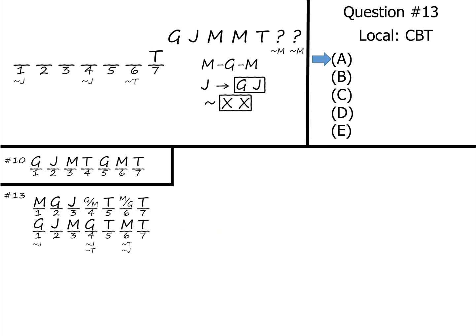Answer choice A says freedom makes a voyage to Trinidad in week one. We'd say no, it's either M or G. B, freedom goes to Martinique in week two. No, that GJ block is going to block space two. C, freedom makes a voyage to G in week three. No, it either has to be a J or an M.